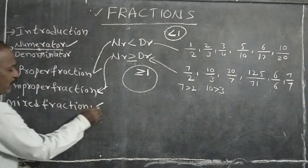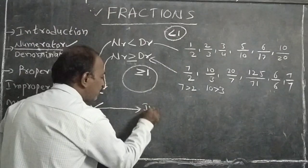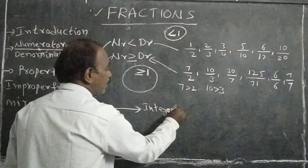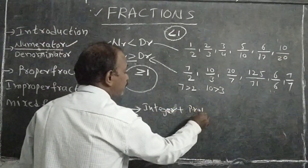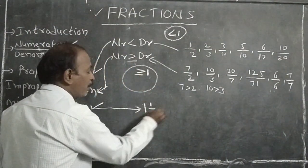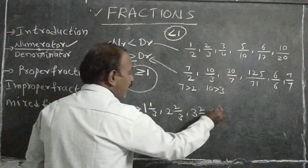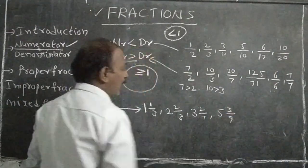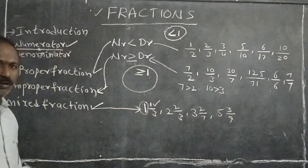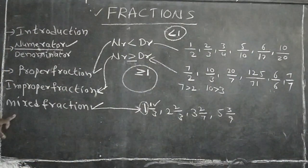What about the mixed fraction? A mixed fraction is a combination of an integer part plus a proper fraction — for example: 1 and 1/3, 2 and 2/3, 3 and 2/7, 5 and 3/9, and so on. The combination of an integer and a proper fraction is known as the mixed fraction.